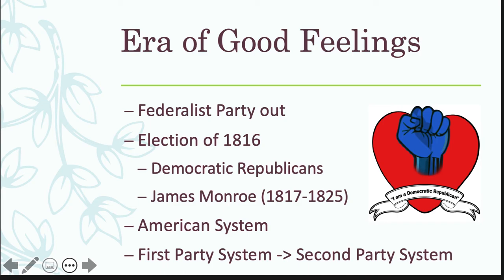James Monroe is going to be another two-term president and they're going to hold the majority in Congress by 85 percent — that is crazy power for this party. We're going to see the American System be adopted during this time. We're building off of Madison's ideas that include support for the National Bank, protective tariffs which is supporting industry, and federal funding for internal improvements. You're going to see this American System come about during the Era of Good Feelings where we have strong nationalism spreading throughout the United States, pushing that nationalism under this one-party dominant system.